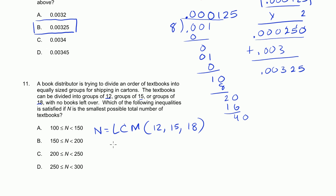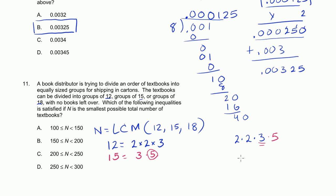Let's take the prime factorization of each. 12 equals 2 times 2 times 3. 15 equals 3 times 5 — we already have a 3, so we just add the 5. So far our LCM candidate is 2 times 2 times 3 times 5, which is divisible by both 12 and 15. Now throw in 18: 18 equals 2 times 3 times 3. We already have a 2 and a 3, but we need another 3, so we multiply by another 3.